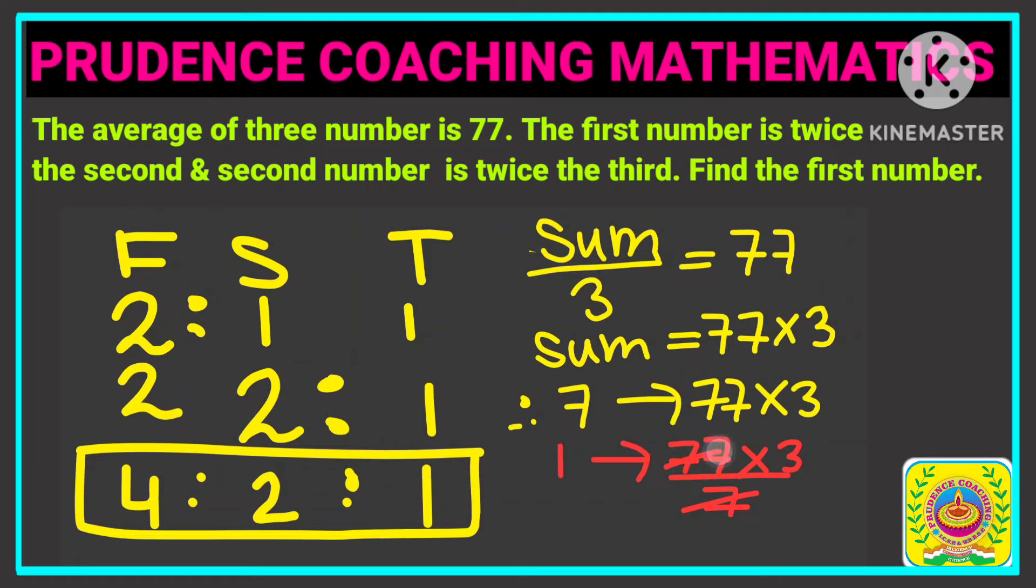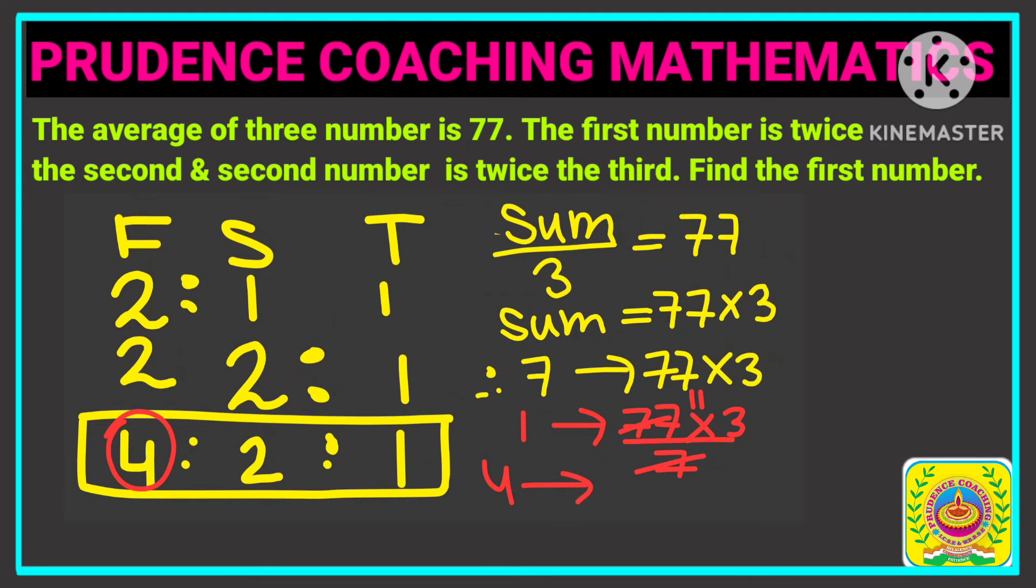So if we cancel with 7, we are getting 11 into 3. But we are asked to find out the value of the first number, that is 4. So 4 will be equal to 11 into 3, the value of 1 unit, multiplied by 4. That is 3 times 4 is 12. 12 into 11 is 132. So our final answer is 132.